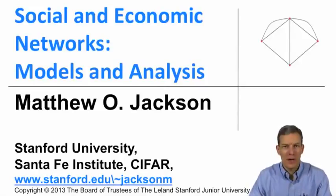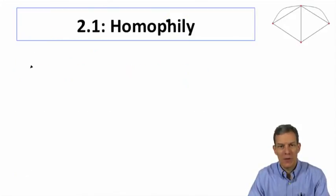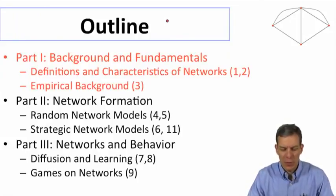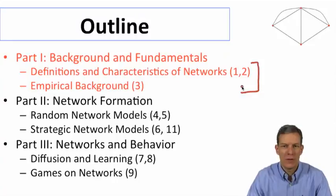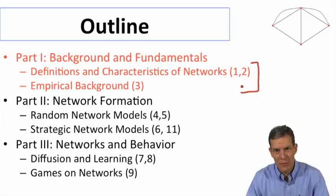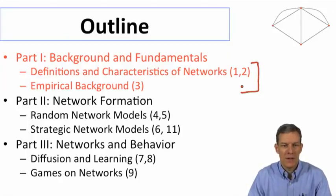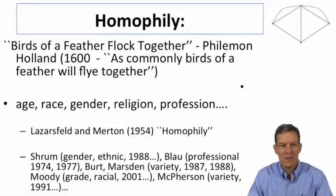We're back again, still talking about network structure. We're going to talk about what's known as homophily. In terms of the overall course outline, we're still in the first part — background and basic definitions and characteristics of networks, ways of representing networks, and tying this in with empirical background which gives us a feeling for what kinds of things are observed. Today's subject is homophily.